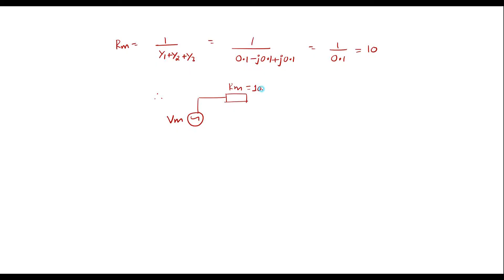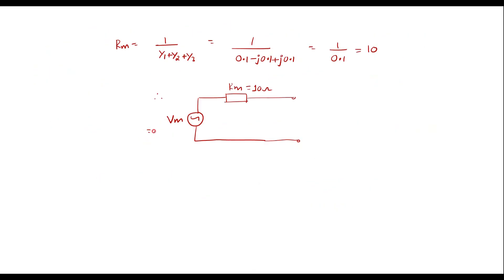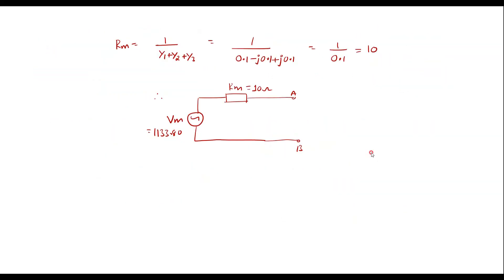Here Rm value is 10 ohm and Vm value is 1133.80. Here to this terminal A and B we supposed to connect this impedance 6 plus J8 in which the current is calculating, that is 6 plus J8 ohm and current through this is I.